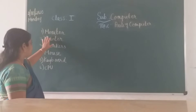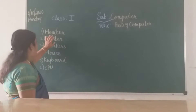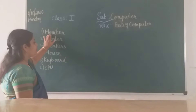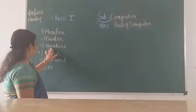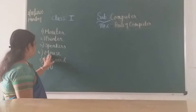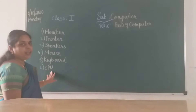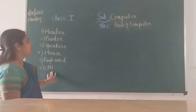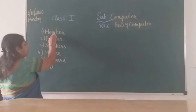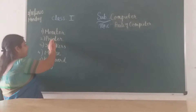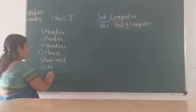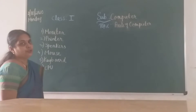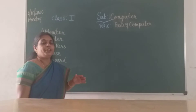So we saw the different parts. The first one is monitor, printer, speakers, mouse, keyboard and CPU. Once again I repeat children: monitor, printer, speakers, mouse, keyboard and CPU. So first coming to your monitor.